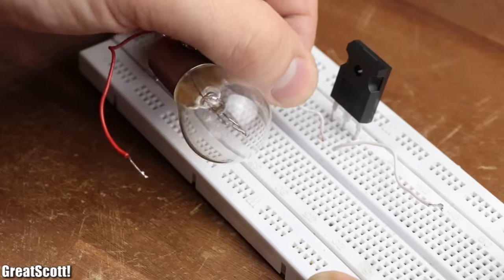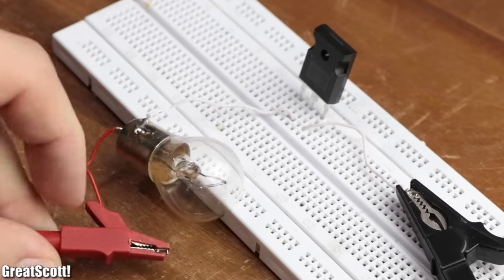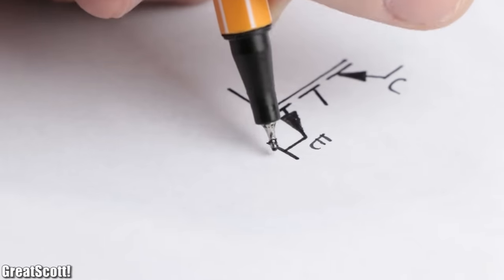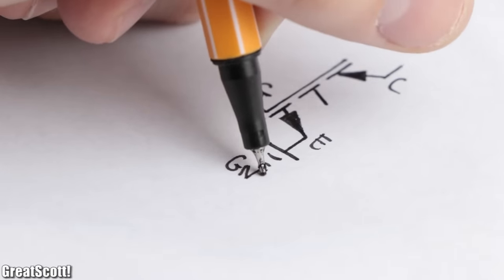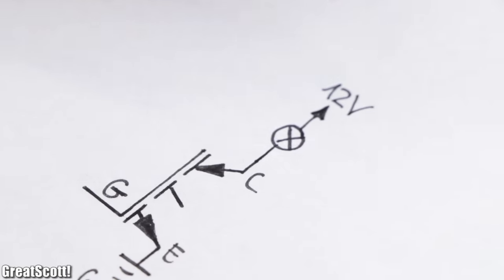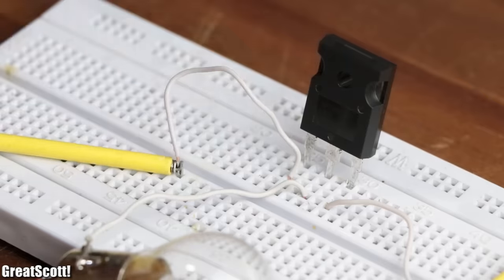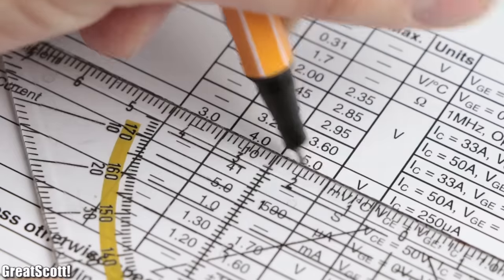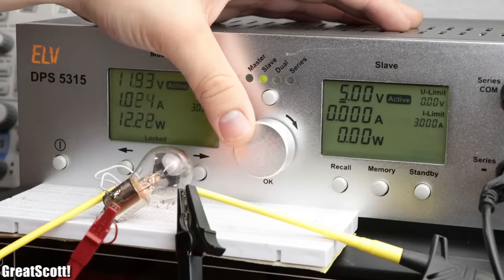But enough theory for now, let's rather create a simple light bulb switch circuit with the IGBT. In such a standard circuit, the emitter connects directly to ground, while the load connects between the supply voltage and the collector. By then applying a voltage higher than the gate threshold voltage to the gate, the IGBT turns on.